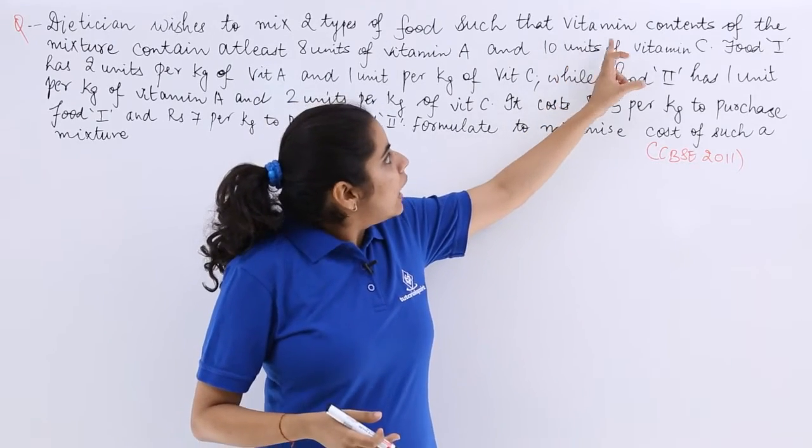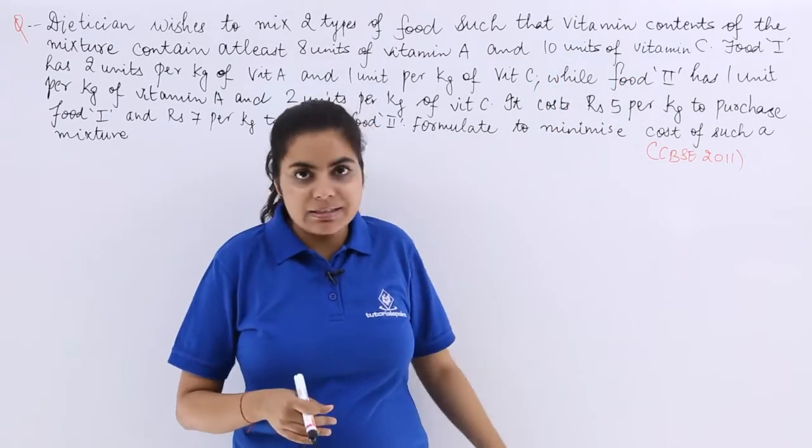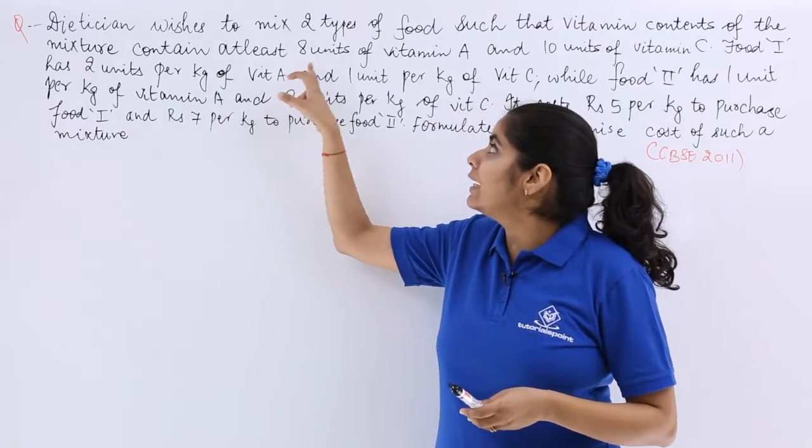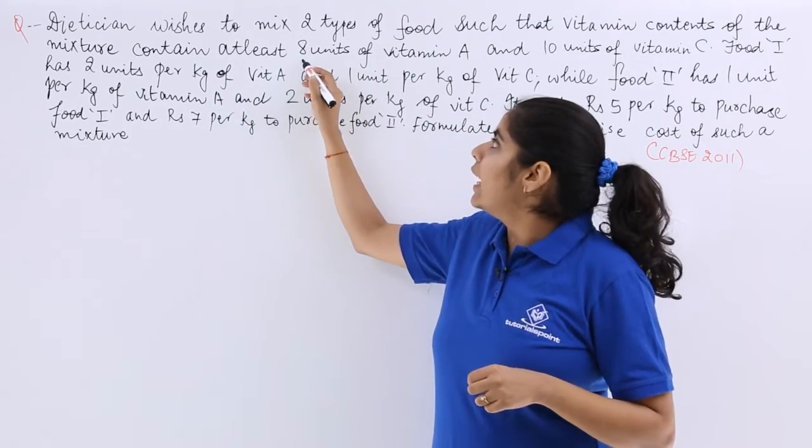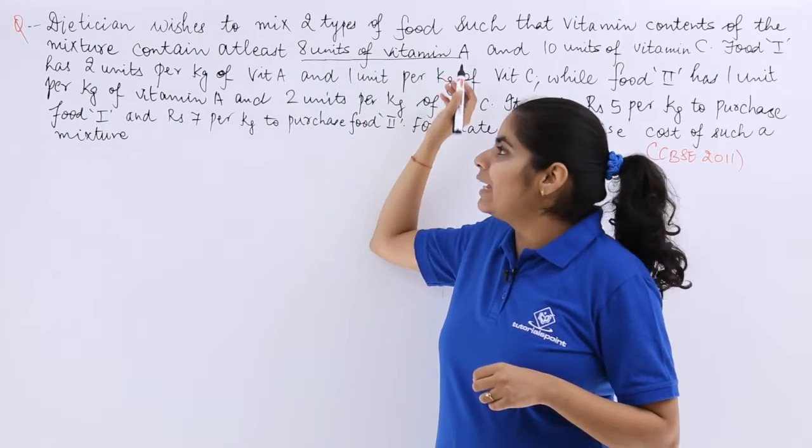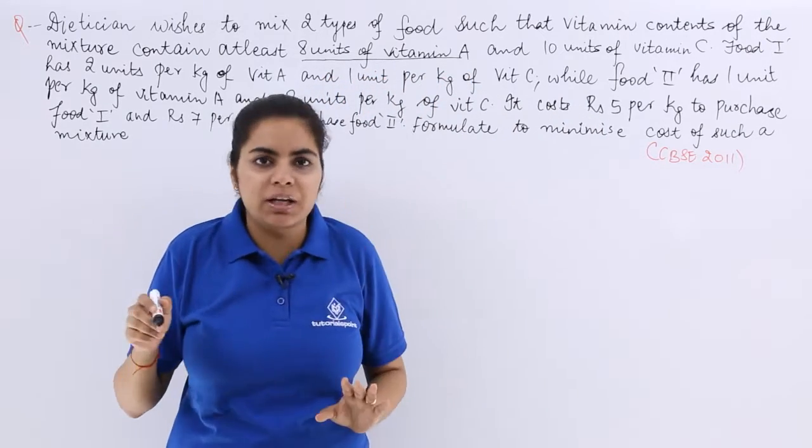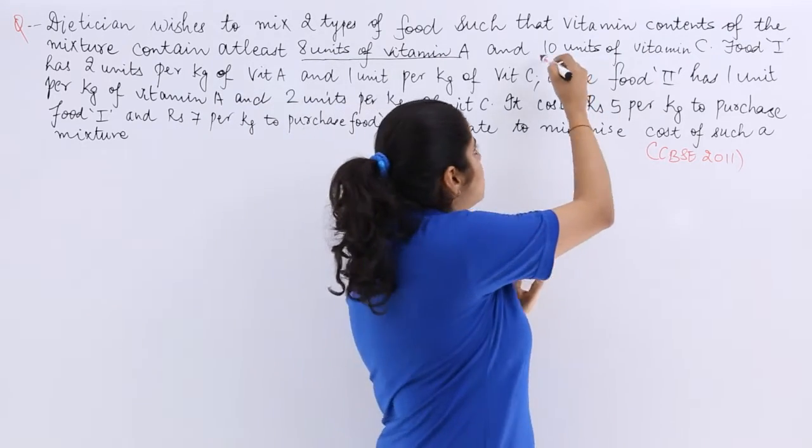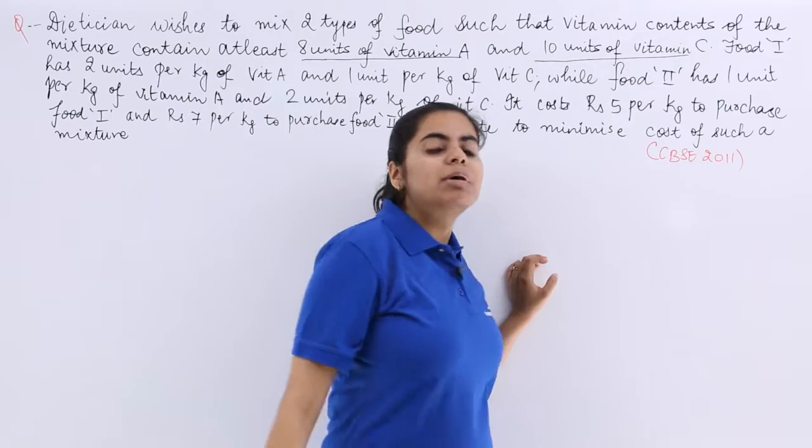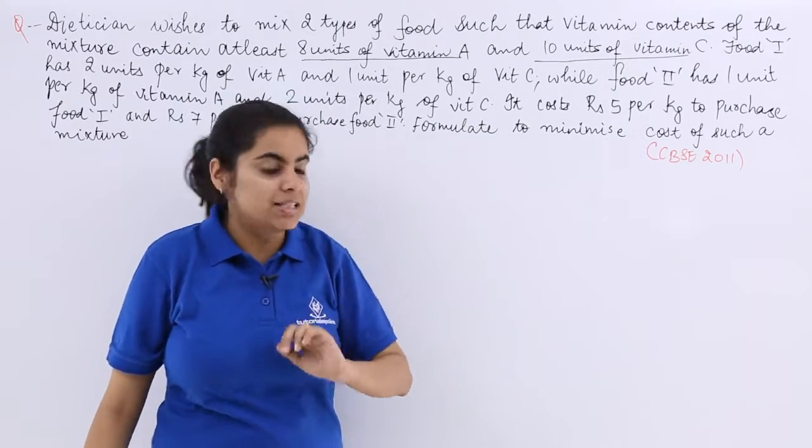She wants to mix 2 types of food, and it is given that the vitamin contents of the mixture contain at least 8 units of vitamin A. So we are talking about at least 8 units of vitamin A. That means minimum 8 unit requirement has to be fulfilled. More also can be there. And then 10 units of vitamin C. So there is no vitamin B but we are talking about vitamin A and C.